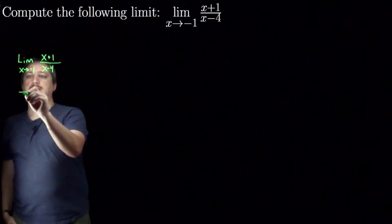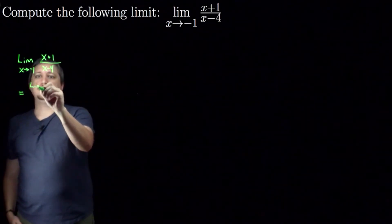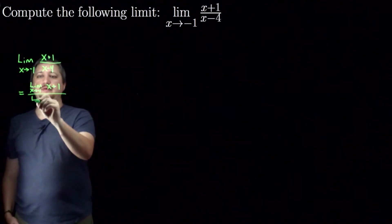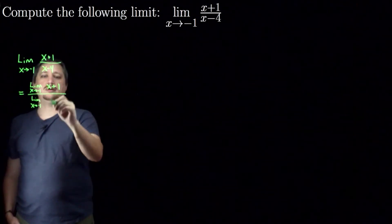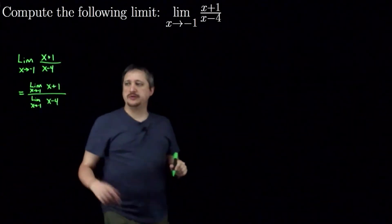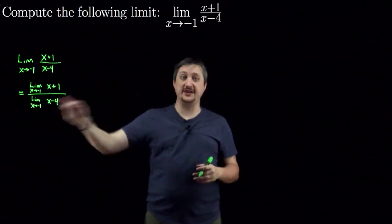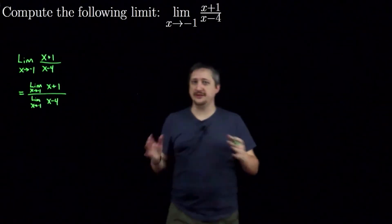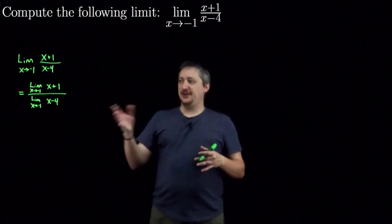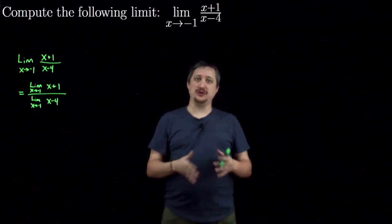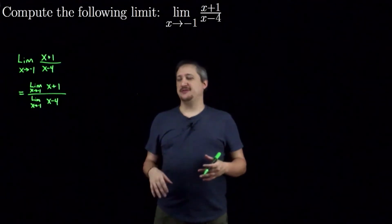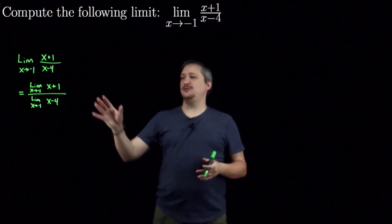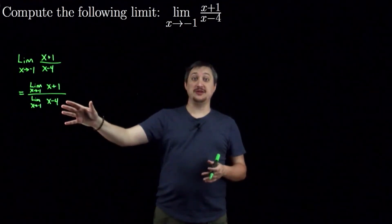So I can rewrite this as the limit as x goes to negative 1 of (x plus 1), divided by the limit as x goes to negative 1 of (x minus 4). I want to stress that this is only possible because the bottom is not 0. This is an important note because we'll do entire sections on limits where you have a fraction and the bottom is 0, and we have to go through a whole other process to compute that. So internalize this: splitting the limit over a fraction only works when the bottom is not 0.